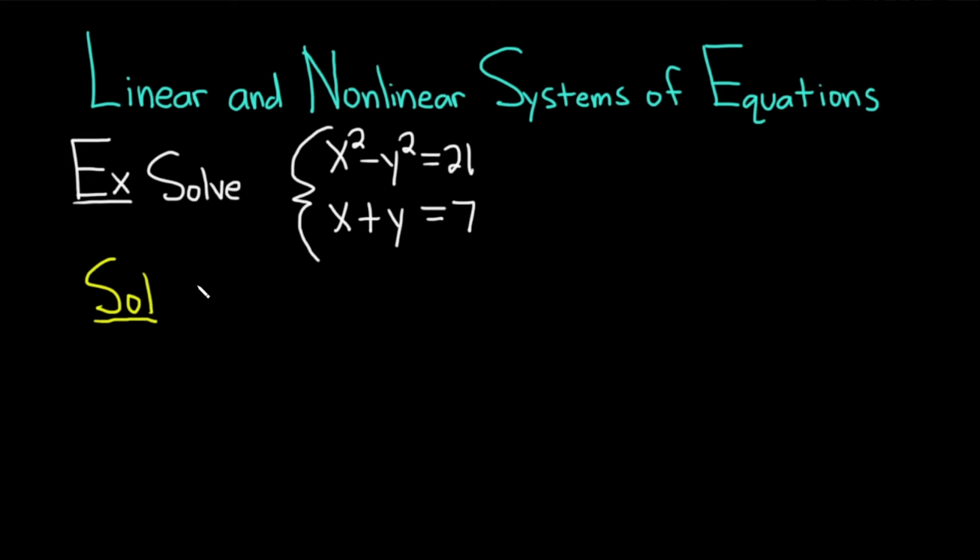This is a nonlinear system. You can tell because you have the squared terms on the x and the y in the first equation. Usually when solving systems, I like to look for ways to eliminate variables. However, in this case, I don't think we can add or subtract anything in an easy way to eliminate any of the x's or y's. Let's use the substitution method.